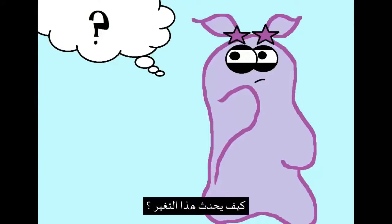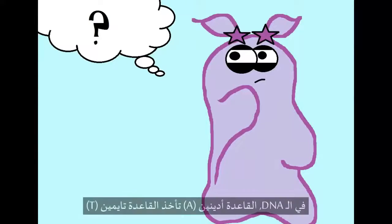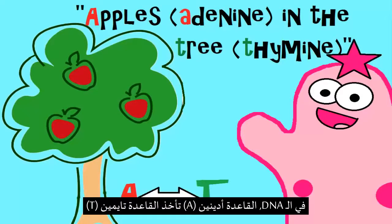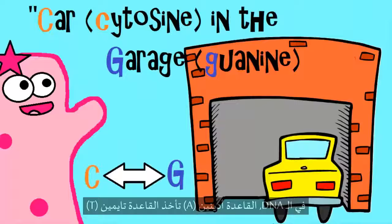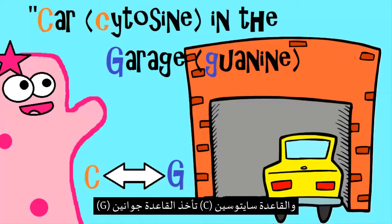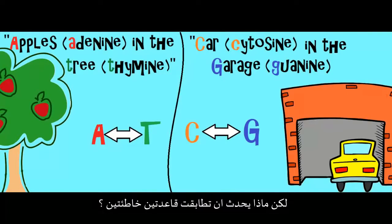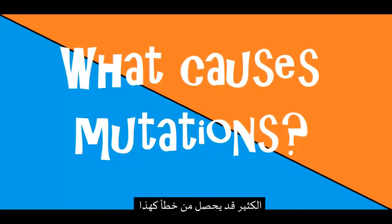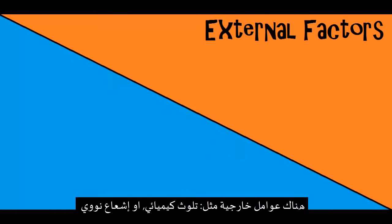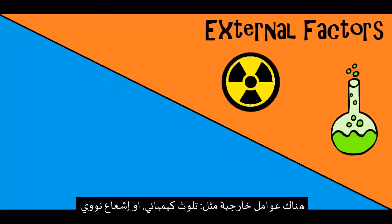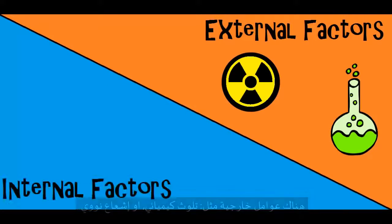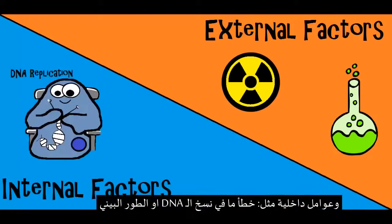So how does a change happen? Remember that in DNA, the base adenine (A) goes with the base thymine (T), and the base cytosine (C) goes with the base guanine (G). But what happens if the wrong base matches up? Many things can cause an error like that. There can be external factors like chemicals and radiation, or internal things, like something going wrong during DNA replication.